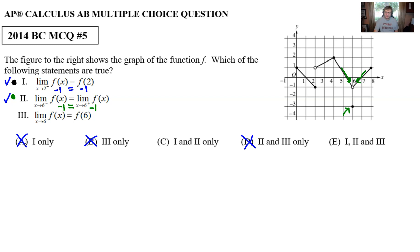Now we're down to whether or not Roman numeral III is a correct statement. The limit as x approaches 6 from both sides is going to be -1 because the two limits above were the same.